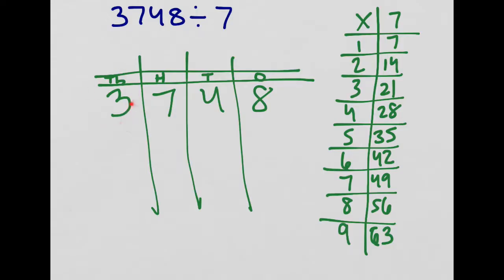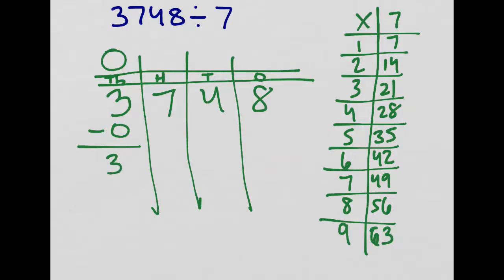I've got a three in the thousands place, so really it means three thousand. I'm going to ask myself: if I was splitting up my thousands evenly, do I have enough thousands to make seven groups? Well, I've got three and I want to make seven groups. If I had three $1,000 bills, could I hand them out evenly to seven people? I couldn't — I don't have enough. I could make zero groups of seven. If I made zero groups of seven, that would be like using zero of those thousand dollar bills. Three minus nothing leaves me with three — I still have three of those bills that I didn't use.